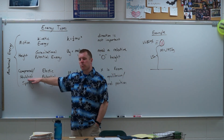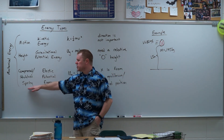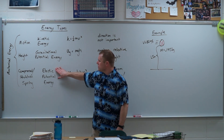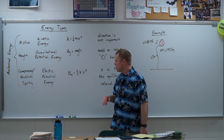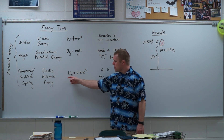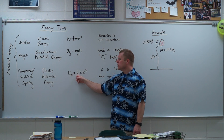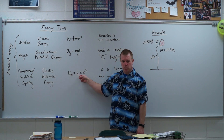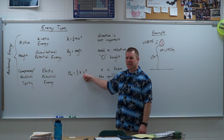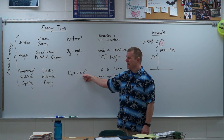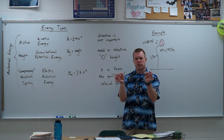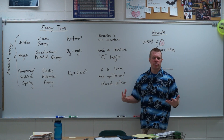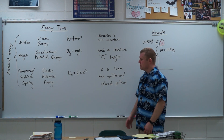The next type is if you have a compressed or stretched spring or rubber band — something like that — you have something called elastic potential energy. Elastic potential energy is equal to one-half times the spring constant times x squared, where x is how far you have stretched or compressed that spring from its equilibrium, or relaxed, position.